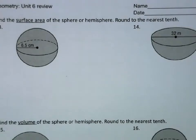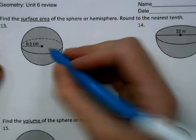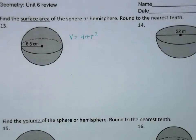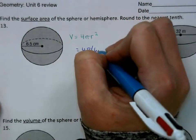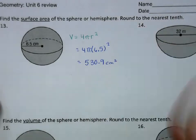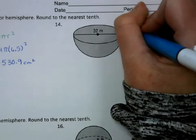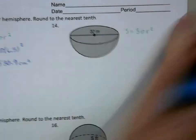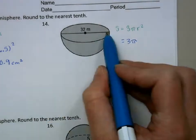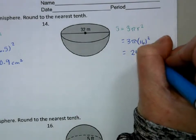Next we have spheres and hemispheres. For the first two we're finding surface area. The surface area of a sphere is 4πr², so that will be 4π times 6.5 squared. The next one is a hemisphere, so its surface area is 3πr². The diameter is 32, which means the radius is 16, and we get 2,412.7 meters squared.